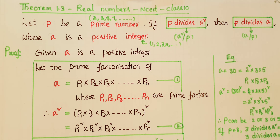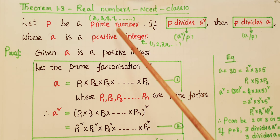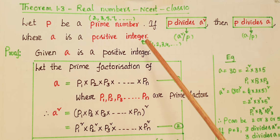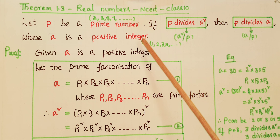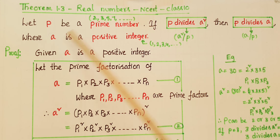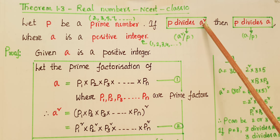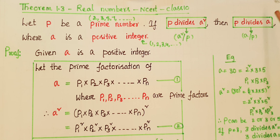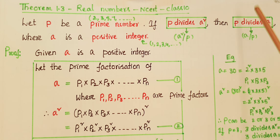Today I am going to prove Theorem 1.3 from Real Numbers, NCERT Class 10. The theorem states: let p be a prime number. If p divides a squared, then p divides a, where a is a positive integer. Prime numbers have only two factors: one and the number itself — such as 2, 3, 5, 7. We have to prove that if a squared is exactly divisible by p, then a is also exactly divisible by p.